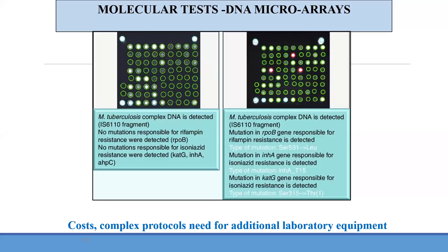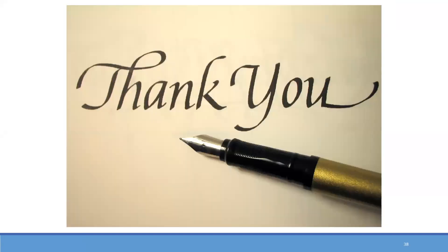Molecular test DNA microarrays detect MTB complex DNA injected by the IS6110 fragment. New mutations responsible for rifampicin resistance are detected via the RPOB gene; INH resistance is detected via IS6110 again and related mutations, including INH-8. These are different kinds of tests available. Because this is a pre-recorded presentation, I will not be able to answer questions directly, but you are free to contact me using the contact number provided. Thank you.